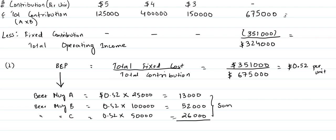Summing all the breakeven units: 13,000 + 52,000 + 26,000 = 91,000 units. So 91,000 units are required to be sold in order to reach the breakeven point. This is the answer to part one.